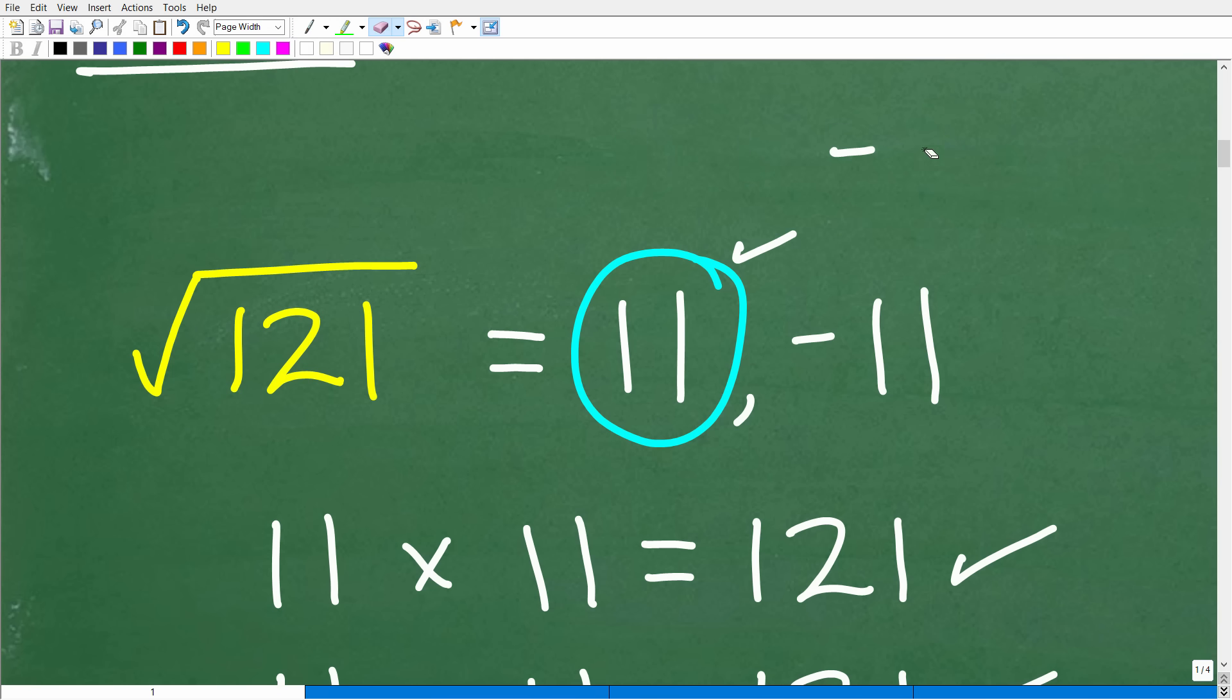So when do we use this negative version? Well, let's suppose I had this equation right here. x squared is equal to 121. Now, this is a quadratic equation, okay? And that means that this thing will have two answers. So to solve for x, I would take the square root of both sides. So x squared is equal to 121. So, again, I'm going to solve for x. So the square root of x squared is x. Now, in this situation, when you're trying to find the solution to, like, an equation, like a quadratic equation,